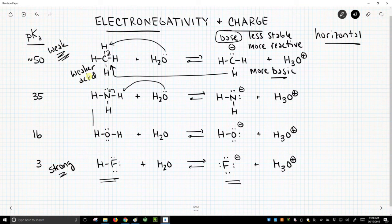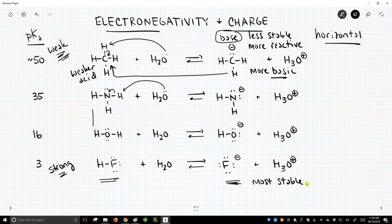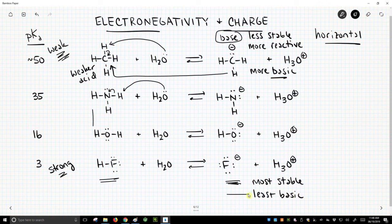Continuing this thought to fluoride: fluoride is the most electronegative. It is the most stable in terms of handling that negative charge. If it's most stable, it's the least reactive. It's a base, so it's the least basic, and that gives rise to the corresponding acid being the strongest acid.